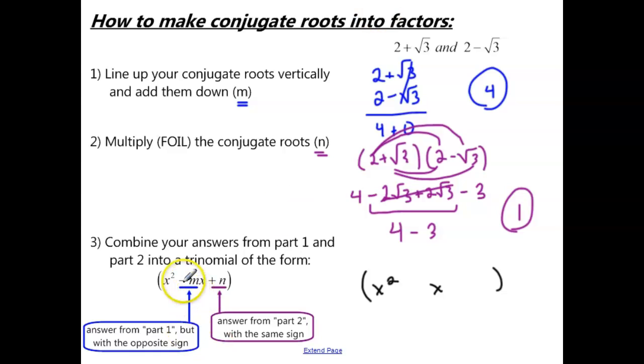Then it says this minus m, that's going to be our answer from part 1, but with the opposite sign. So our answer from part 1 was positive 4, and we're going to use the opposite sign, negative 4, as the coefficient for our x term.